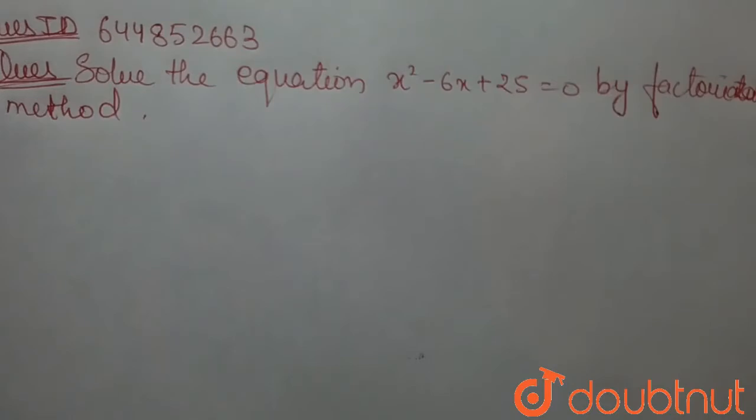Hello everyone, our today's question is solve the equation x² - 6x + 25 = 0 by factorization method.